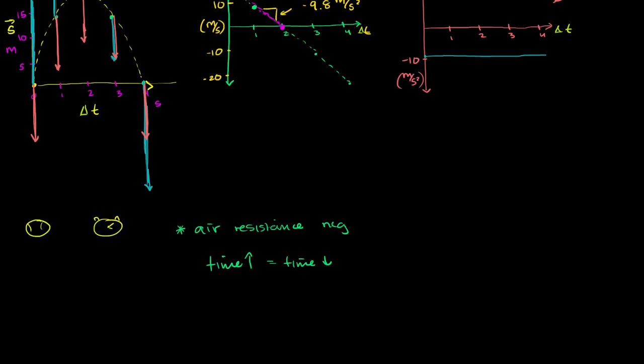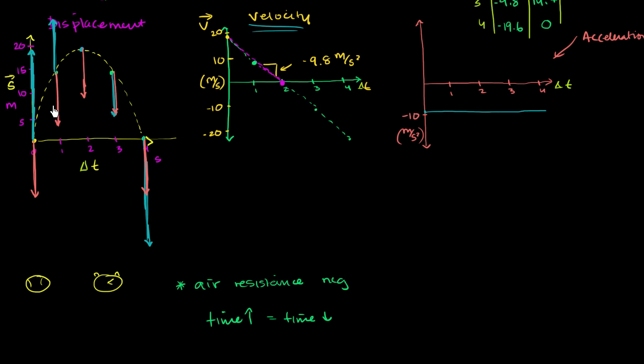If you look at this previous video where we plotted displacement versus time, you see after two seconds the ball went from being on the ground, or the thrower's hand, all the way to its peak height. And in the next two seconds it took that same amount of time to go back down to the ground, which makes sense.